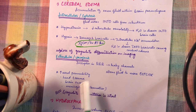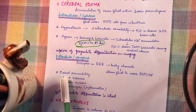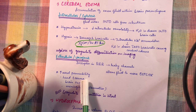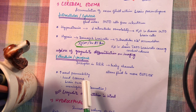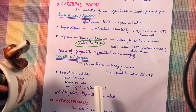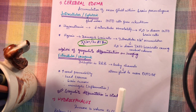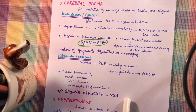Next is extracellular vasogenic edema. It is due to disruption of the blood-brain barrier, which leads to leaky channels and allows fluid to move outside. The key pathogenesis is increased vessel permeability leading to leakiness. Its causes include head trauma, brain tumors, meningitis, or any inflammation. On imaging, gray-white differentiation remains intact in the extracellular type.